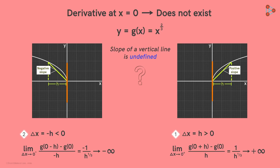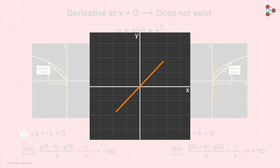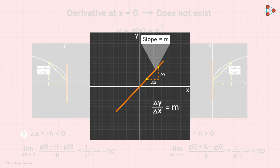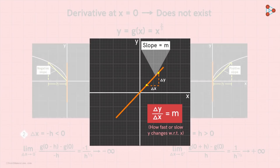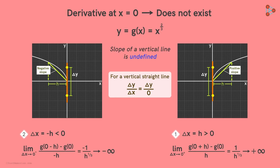Why? Consider this straight line graph of a function. Let's say the slope of the straight line is m. So for any two points on this line, the ratio of change in y over change in x is equal to m. The slope tells us how fast or slow the value of y changes with respect to x. But observe these vertical lines — for any two points on it, the change in x will always be zero. So we cannot define this ratio. Hence the slope of a vertical straight line is undefined.